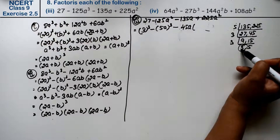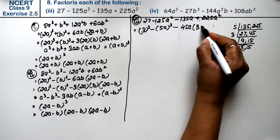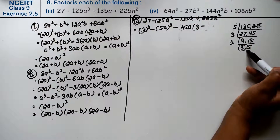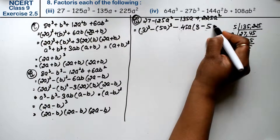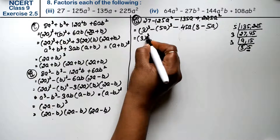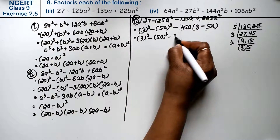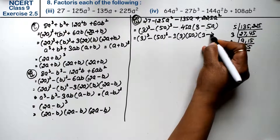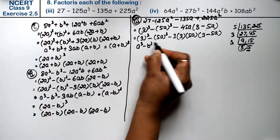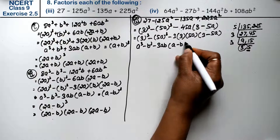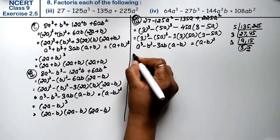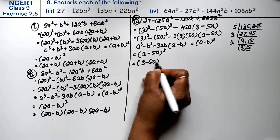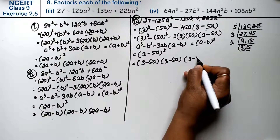So inside remains 3, and since plus is outside and minus was taken out, the sign flips. We have 3 cube minus (5a) whole cube, written as: (3) cube minus (5a) cube minus 3 into 3 into 5a into (3 minus 5a). This matches the formula a cube minus b cube minus 3ab into (a minus b) — the (a minus b) whole cube formula. So a is 3 and b is 5a, giving (3 minus 5a) whole cube. The answer is (3 minus 5a).